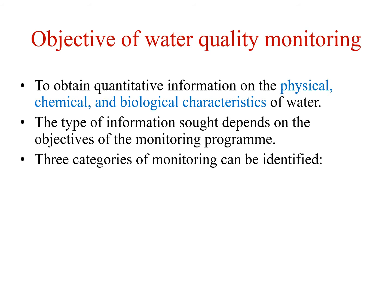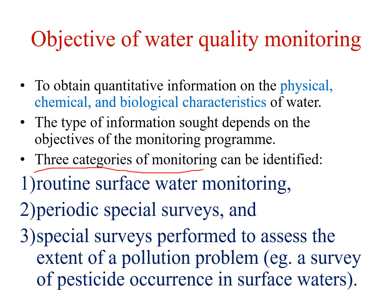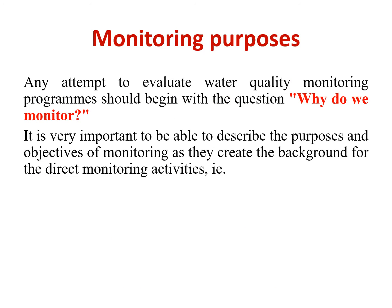The type of information obtained depends on the objectives of the monitoring program. There are three categories of monitoring: first, routine surface monitoring for general characterization; second, periodic spatial surveys; and third, spatial surveys performed to assess the extent of a pollution problem — for example, a survey of pesticides occurring in a water body for monitoring purposes.